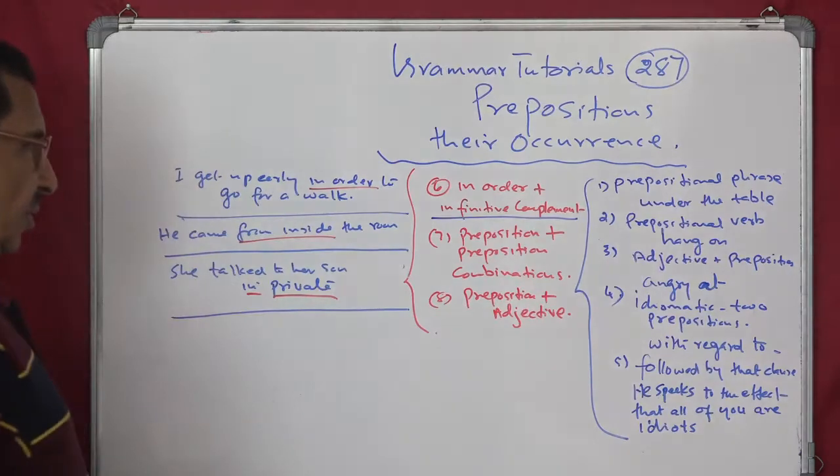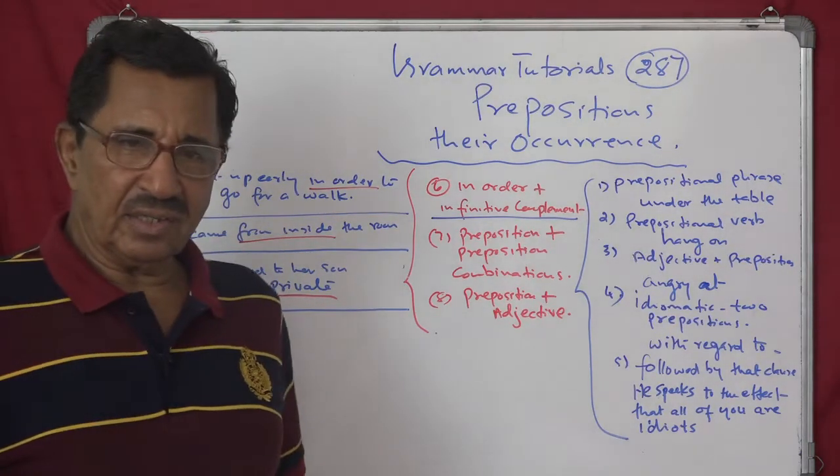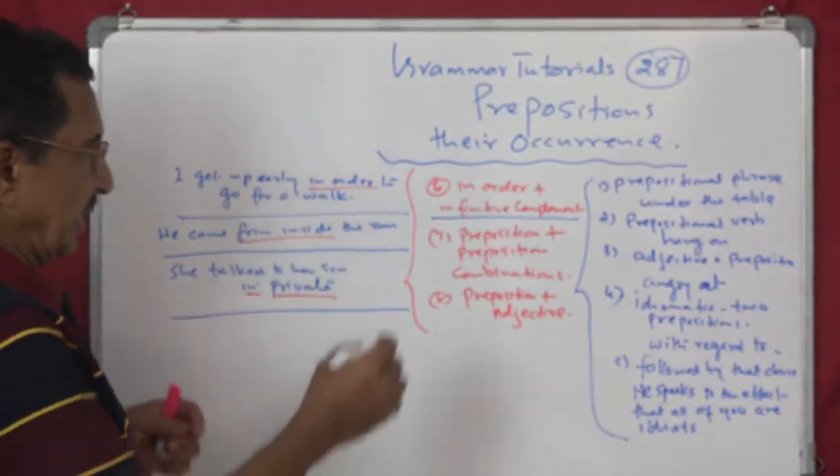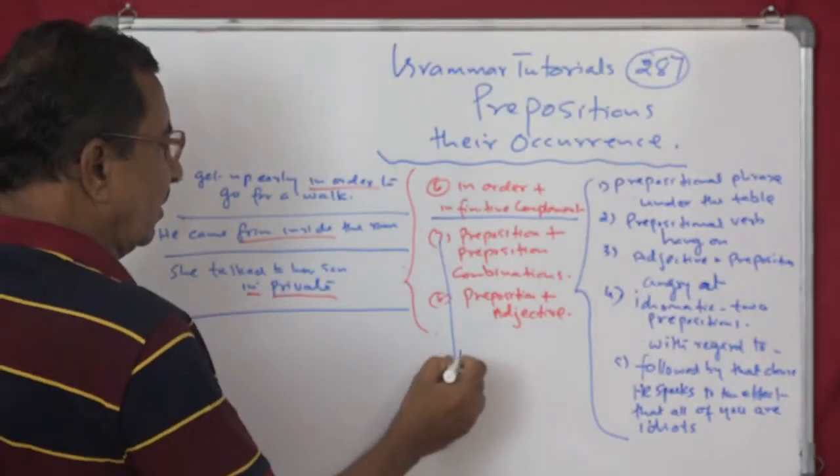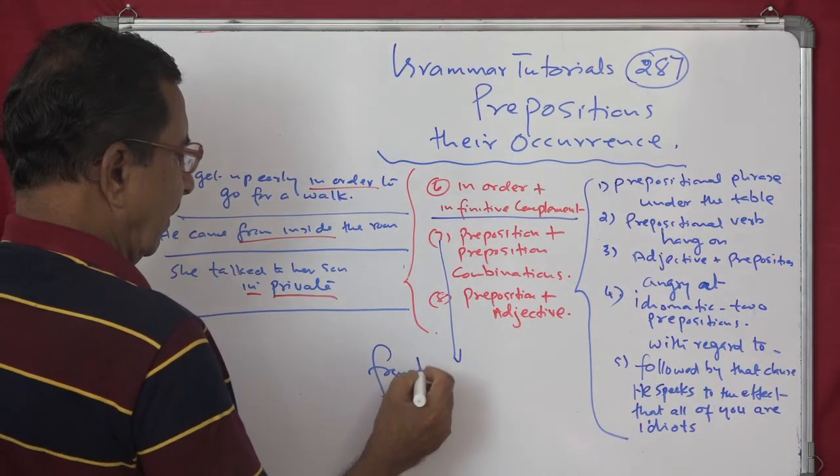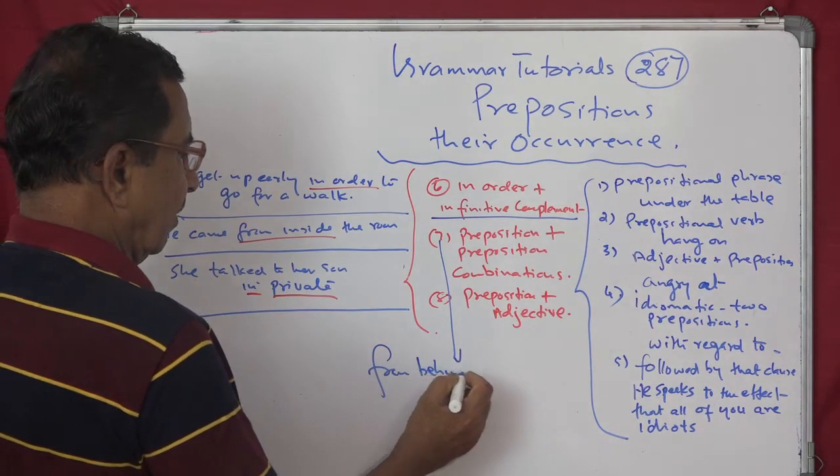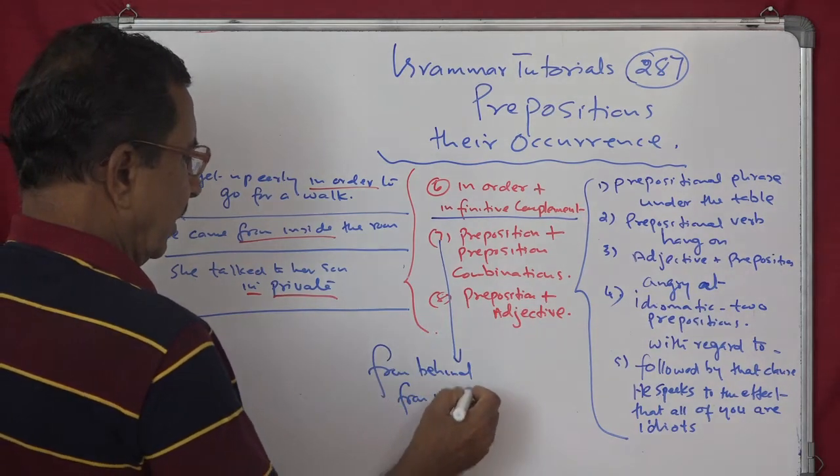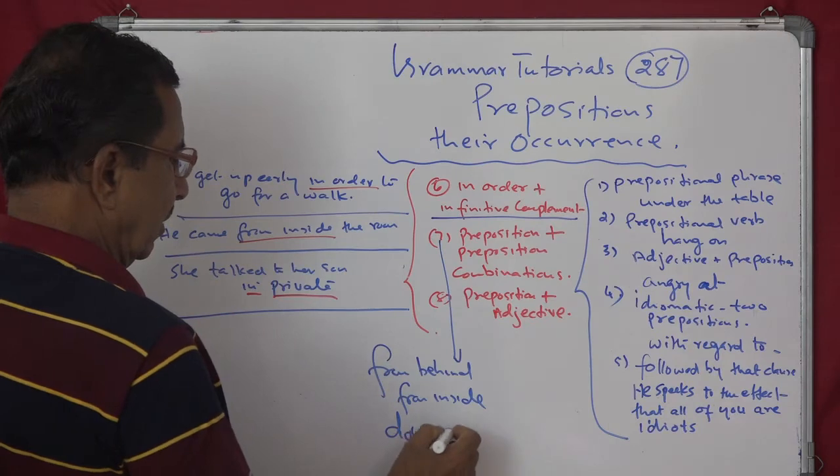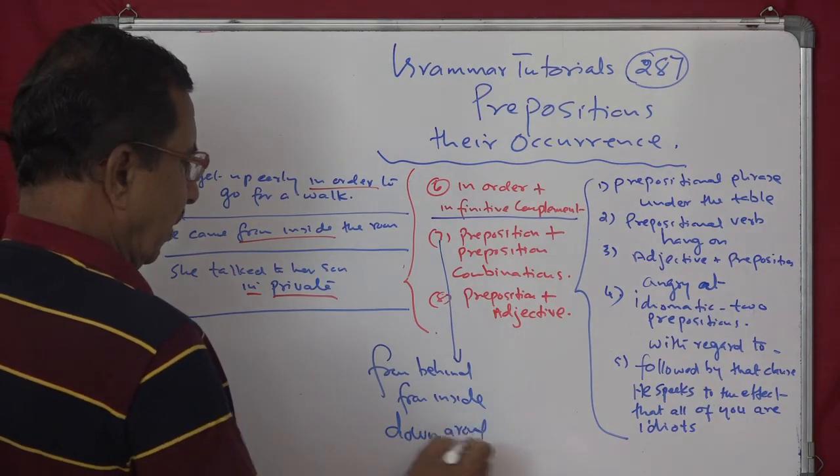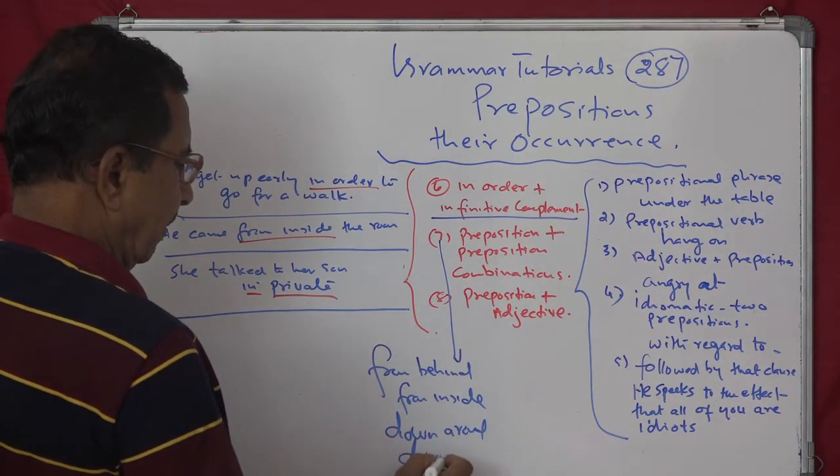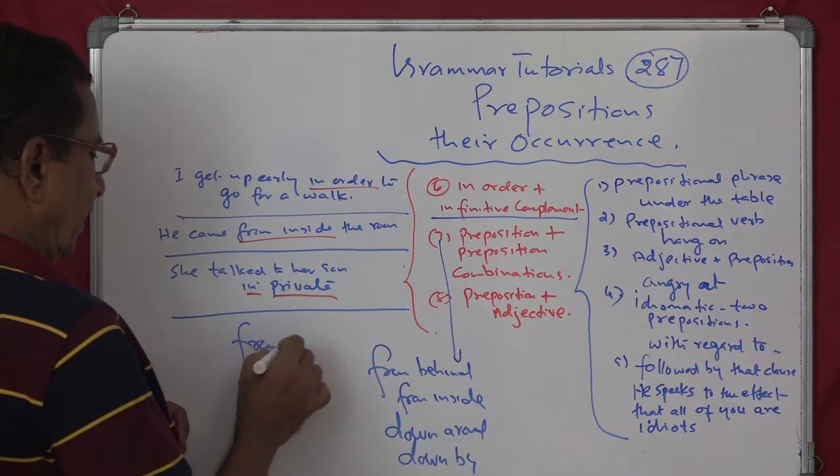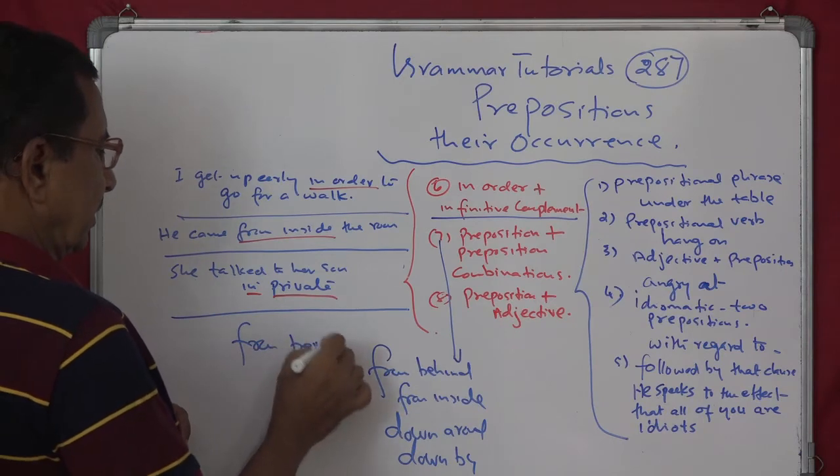In order to. Preposition as I told you, a word. Preposition with preposition. From behind, from inside. See examples for this. From behind. From behind. From inside. Down around. Down around. Down by. From beside.